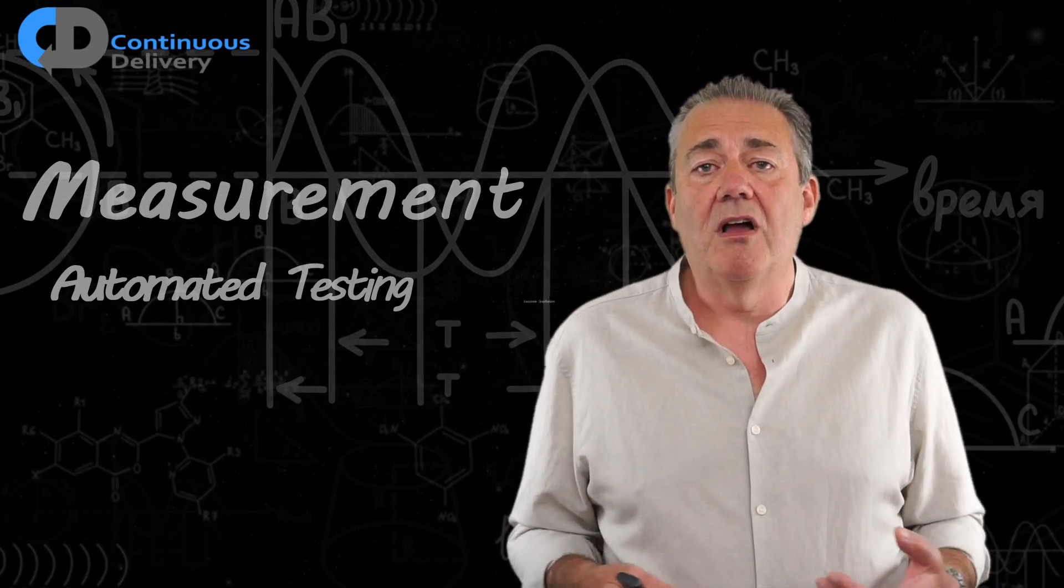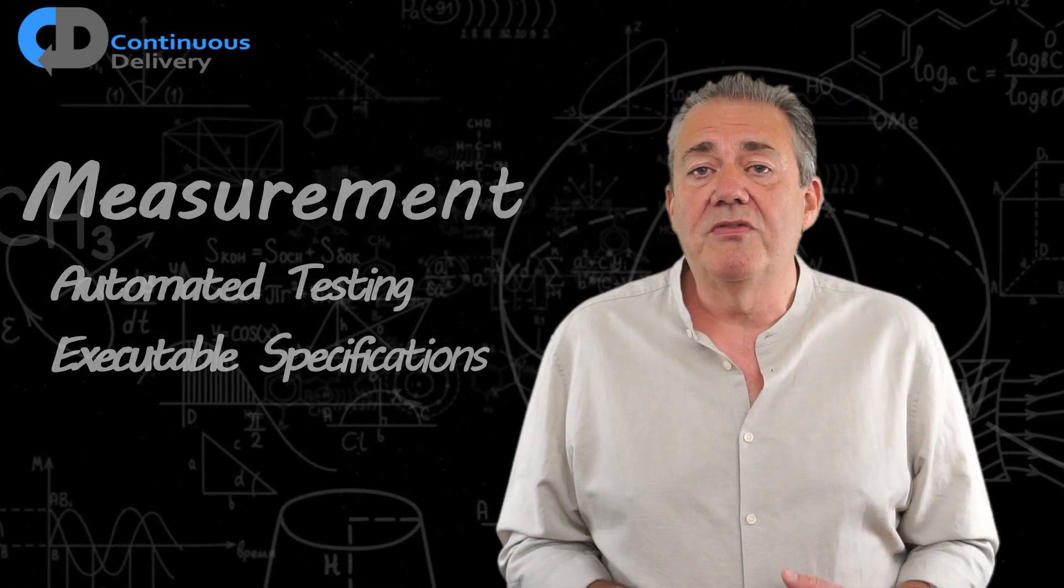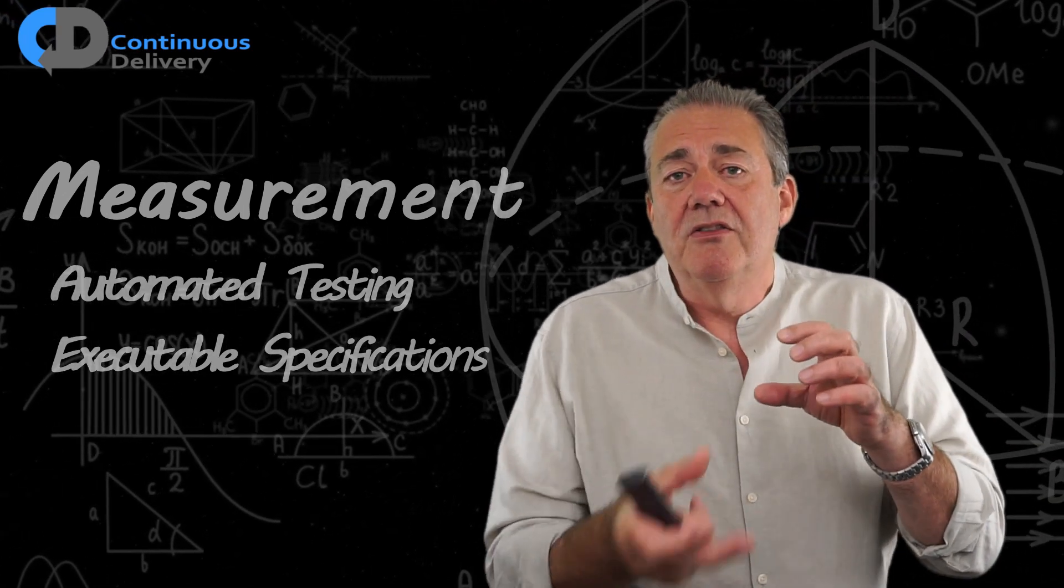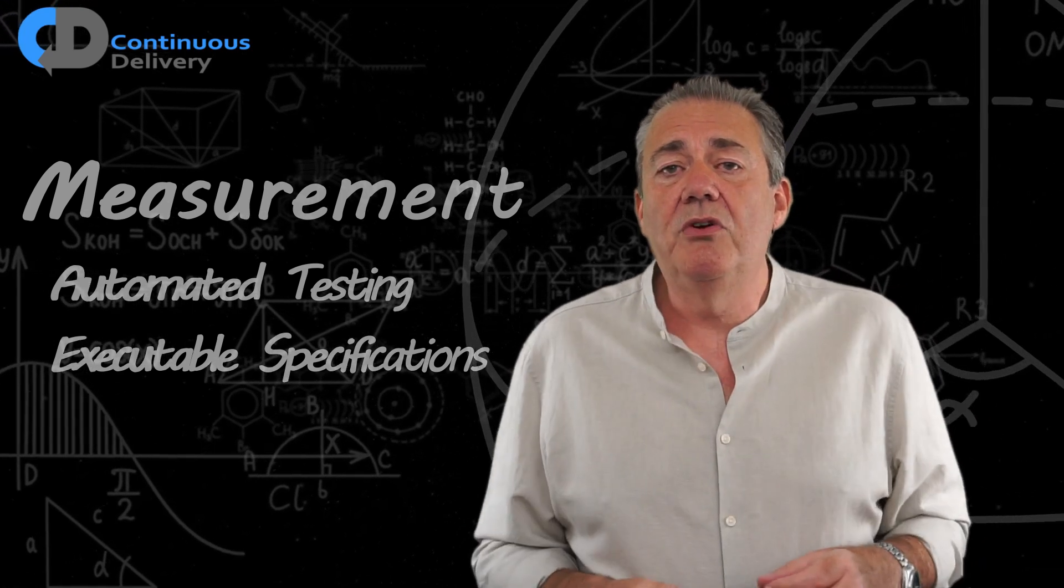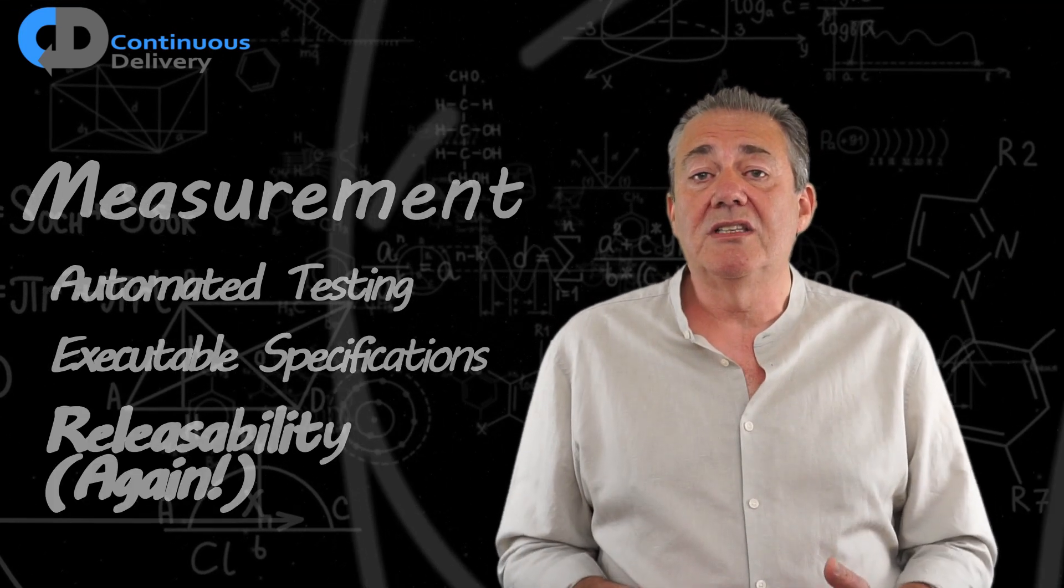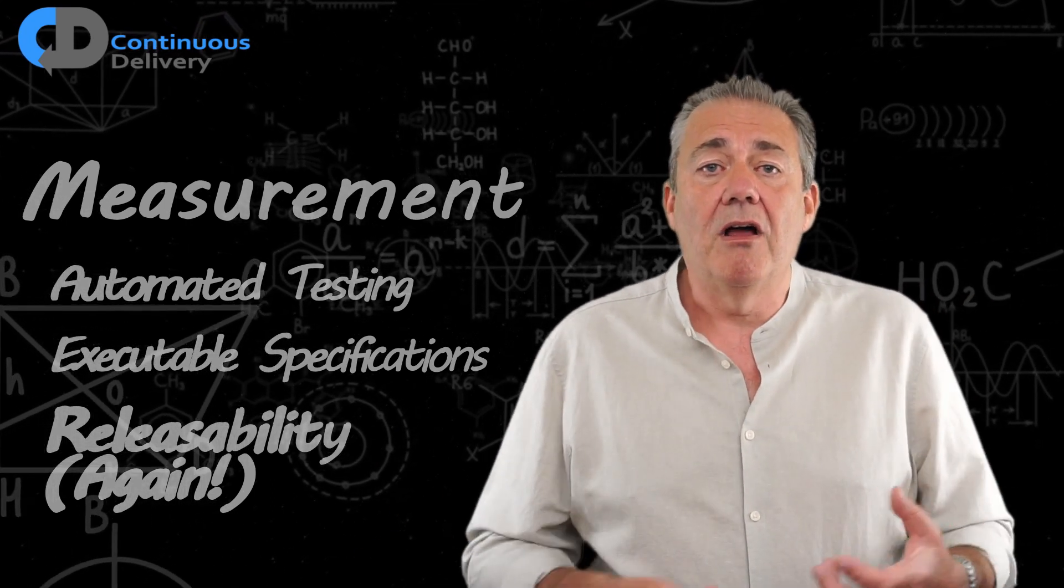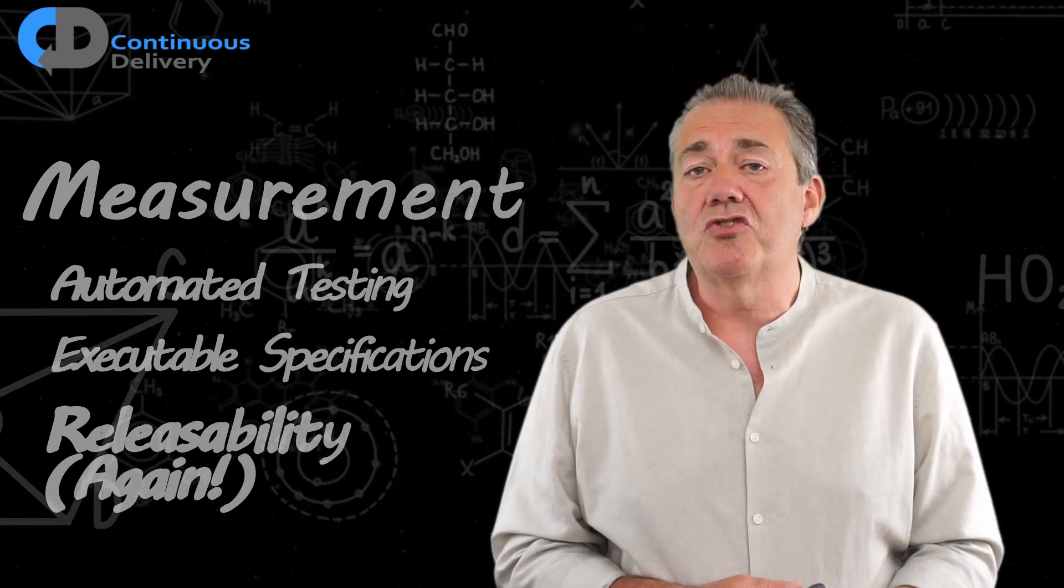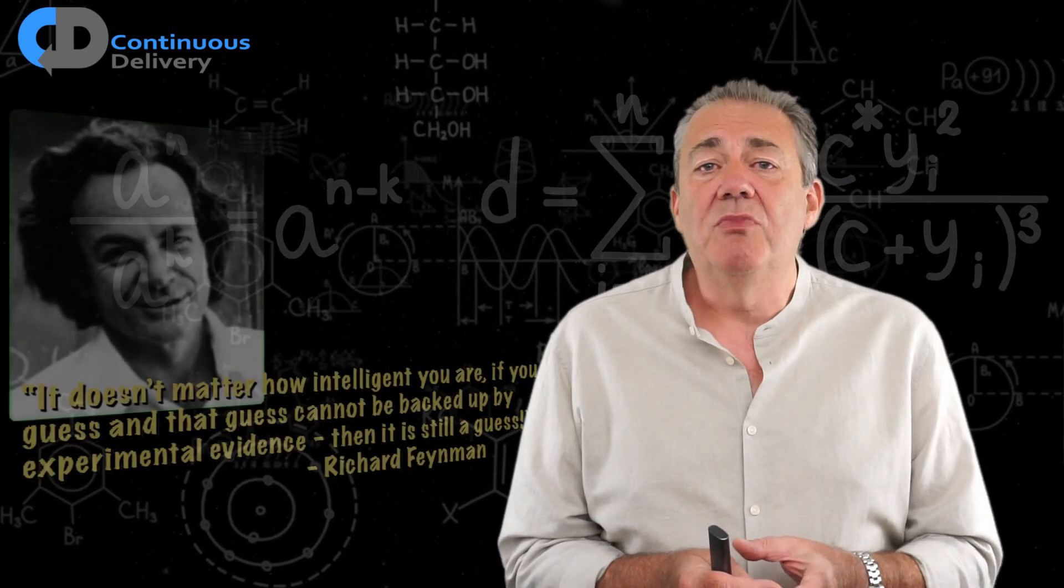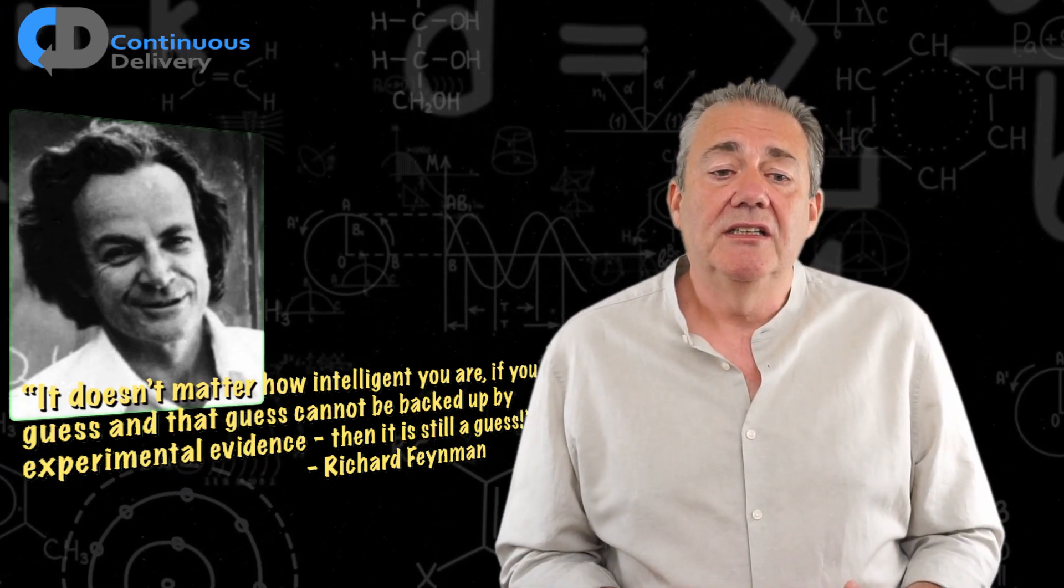One particularly strong form of measurement is the use of executable specifications. You can think of those as a form of tests, but we can structure our software development around executable specifications and then measure the quality of our changes through other forms of testing. The third one in my list is releasability again. If we can create releasable code on a regular, repeated basis, that puts us in a strong position to understand the progress we're making. Remember, without all of these kinds of measurement, everything we're doing is still only a guess.